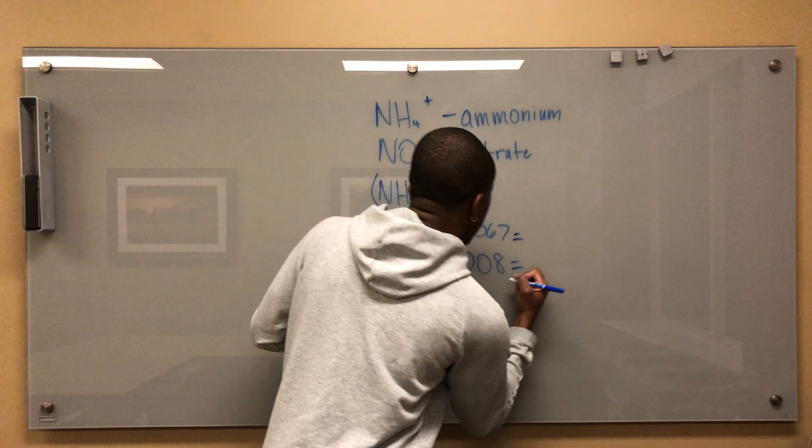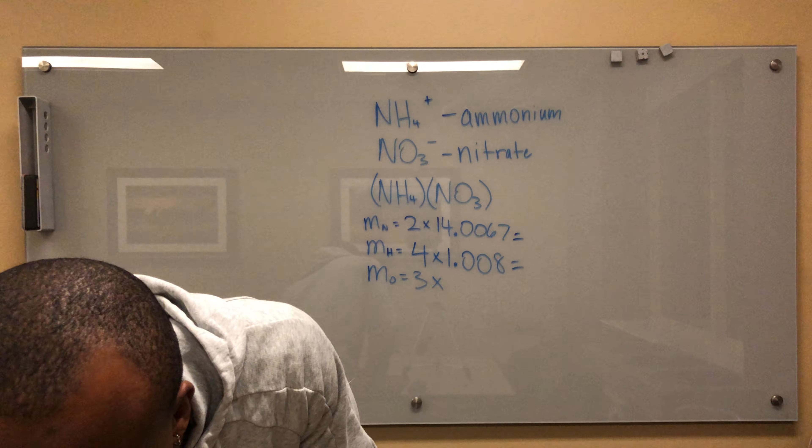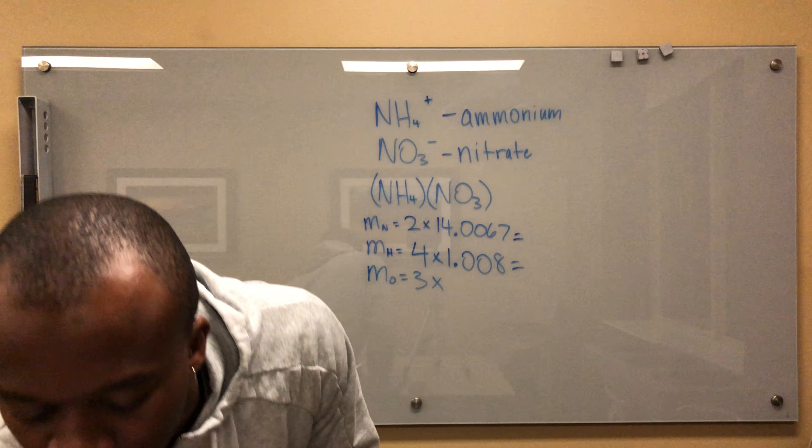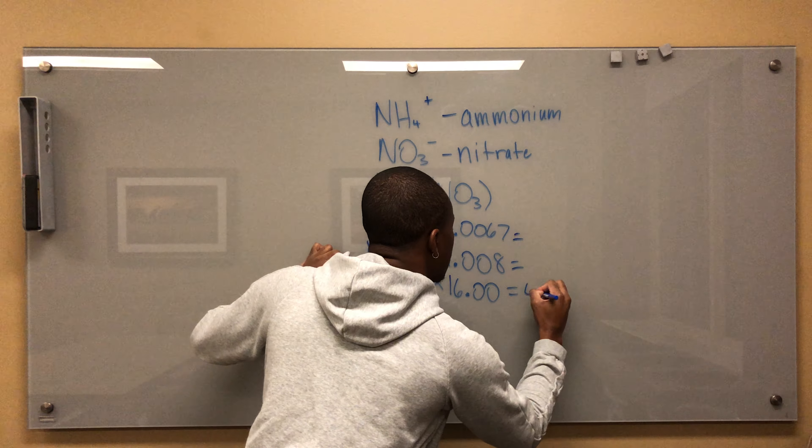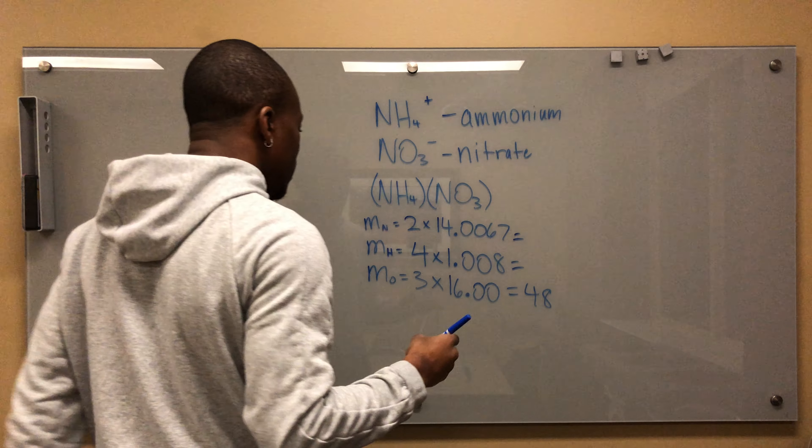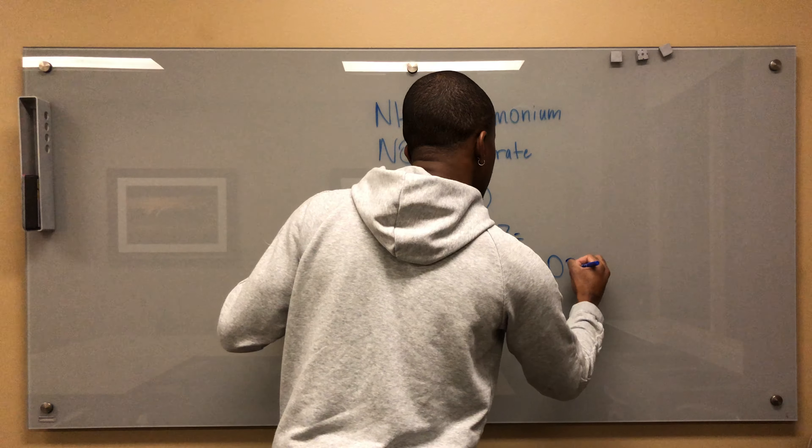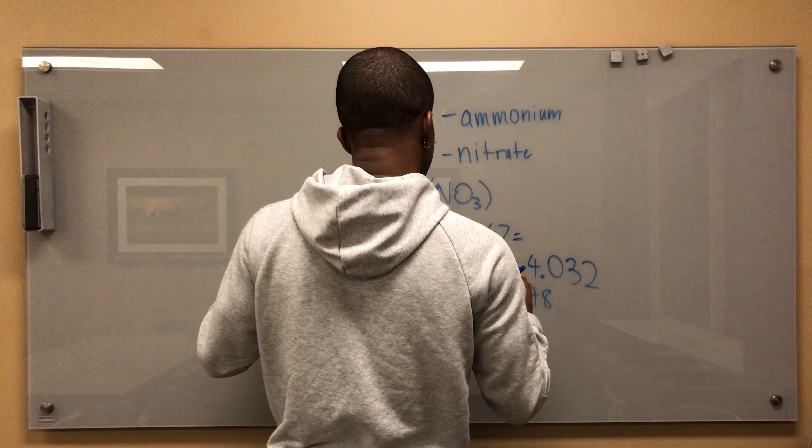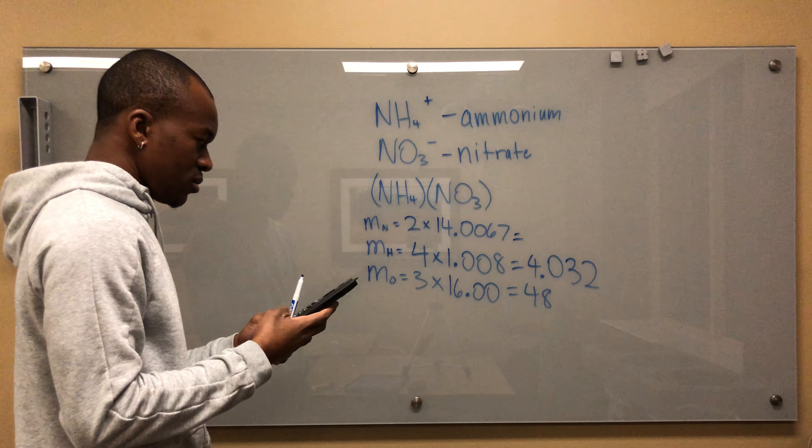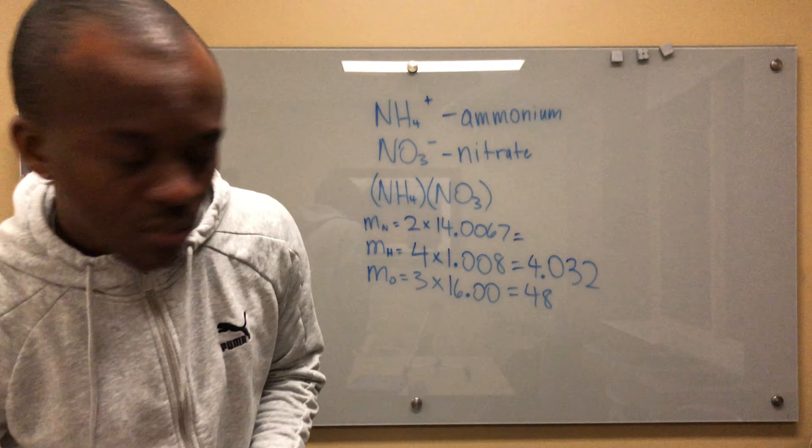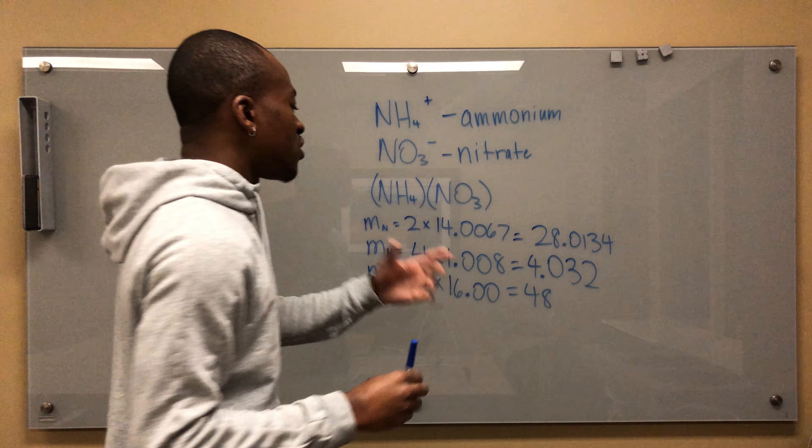Mass of oxygen equals three times 16.00 - I know that's 48. I know nitrogen is going to be 4.032. I'm not going to attempt that in my head - it's 28.0134.